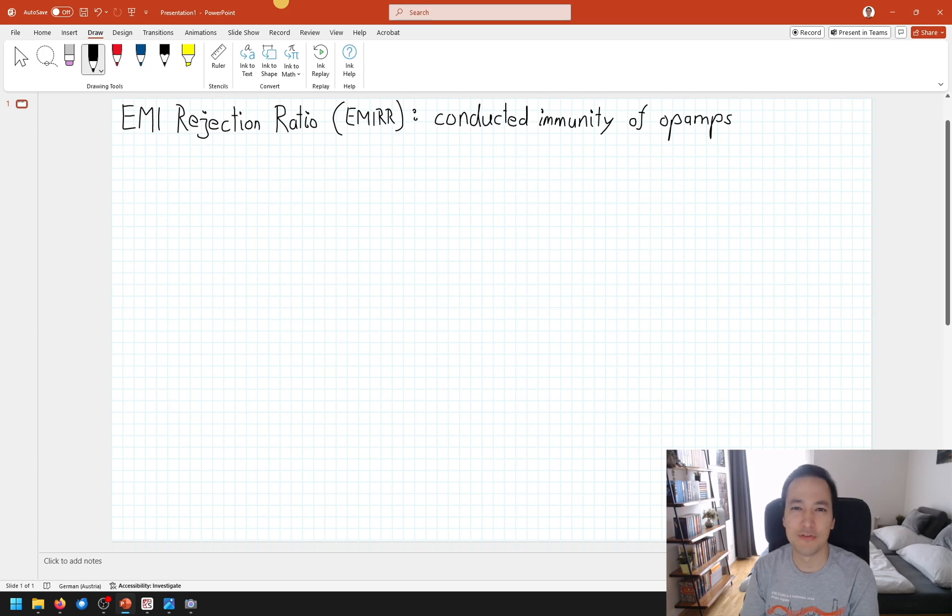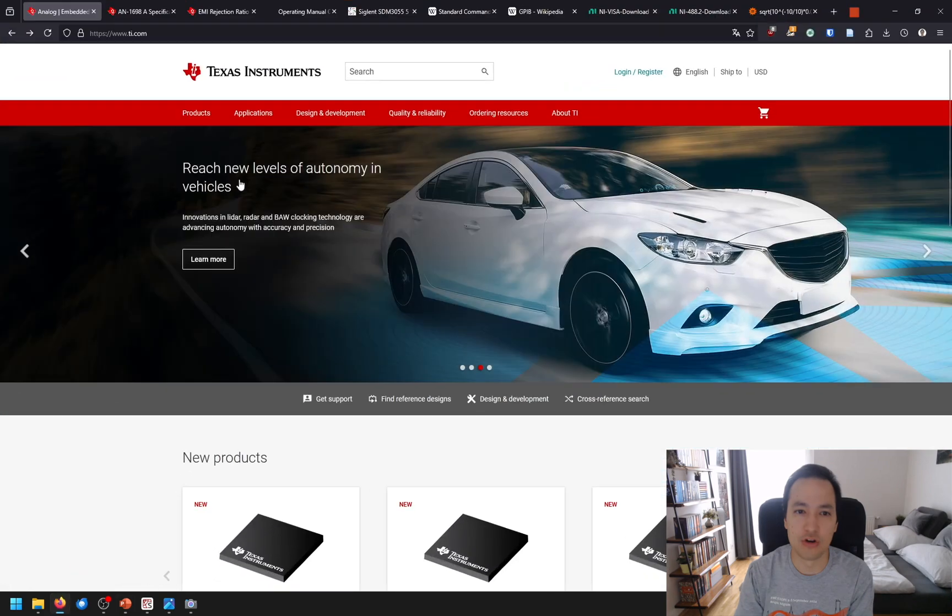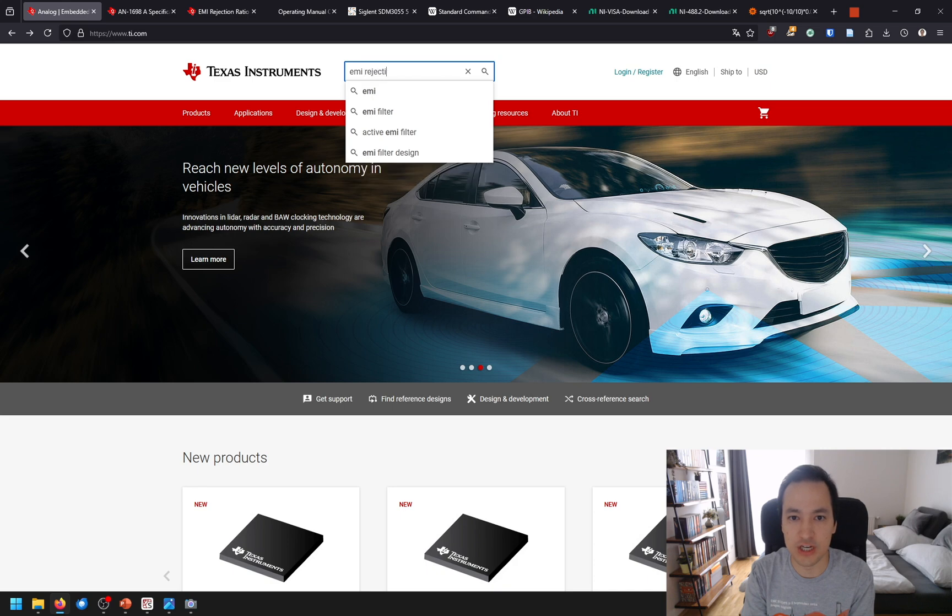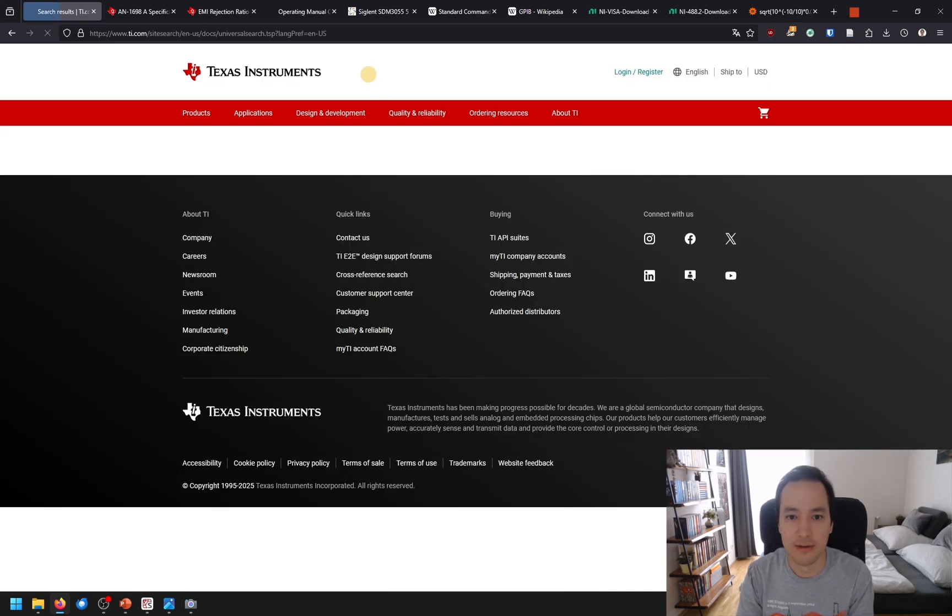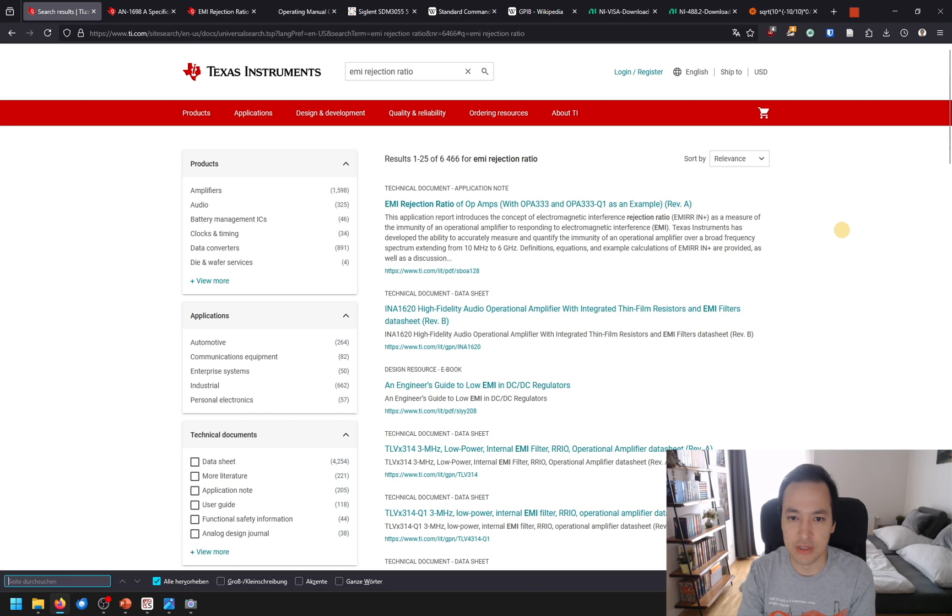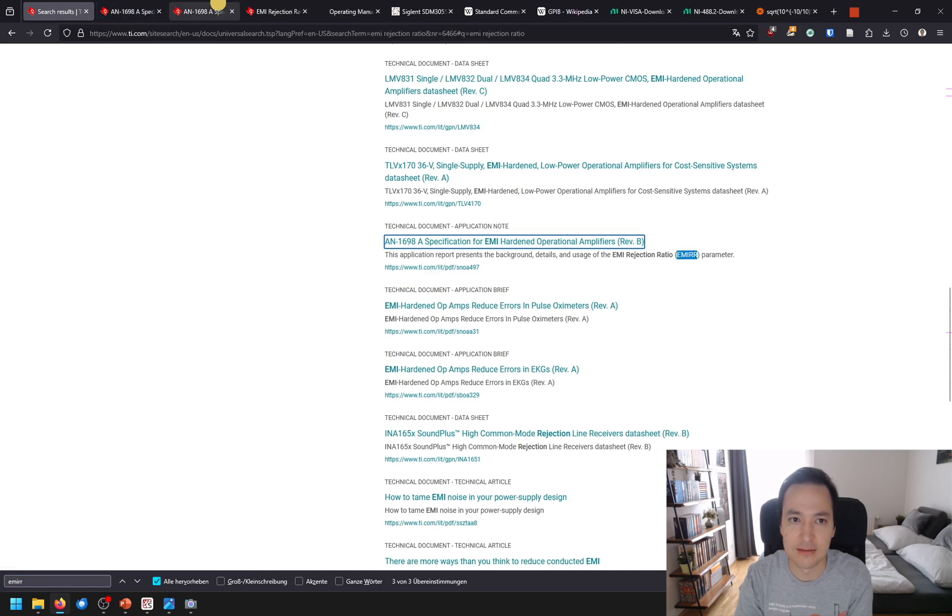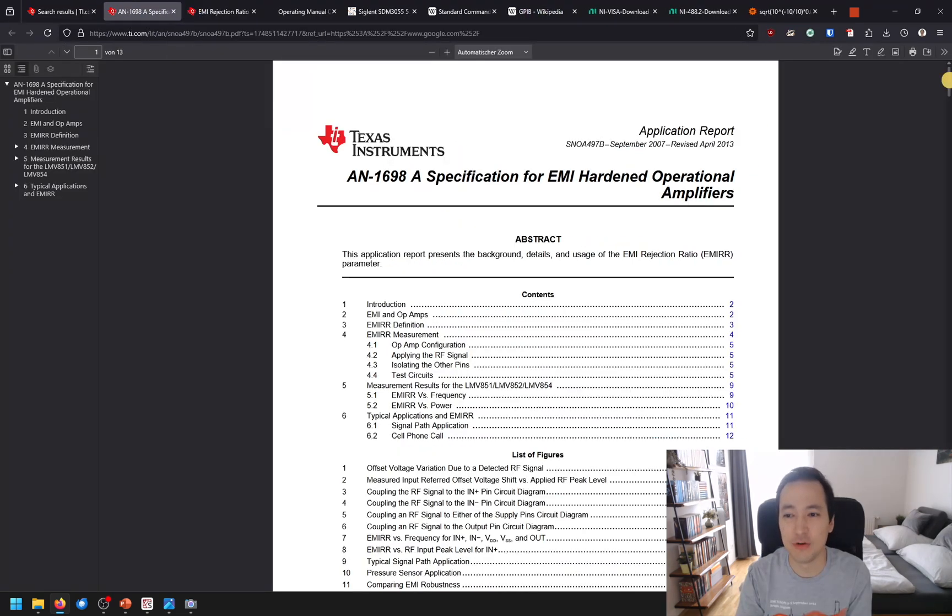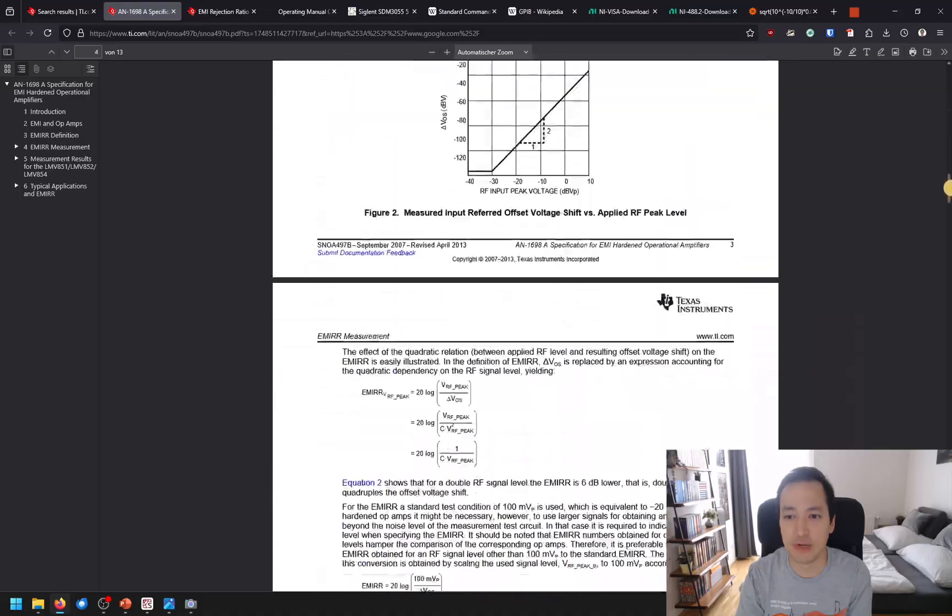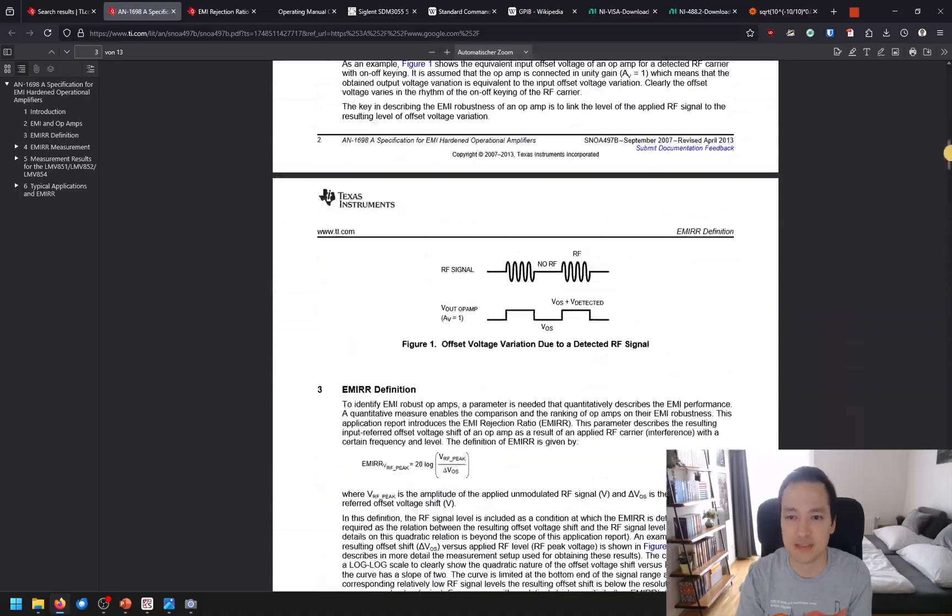EMI Rejection Ratio is a figure of merit for characterizing the conducted immunity of analog ICs, especially for operational amplifiers. If we take a look on the Texas Instruments homepage, we can look for EMI Rejection Ratio and find some application notes. In this video I would like to talk about this application note AN1698. Please have a look at this application note before coming to the lab, but we will discuss the basics now in this video.